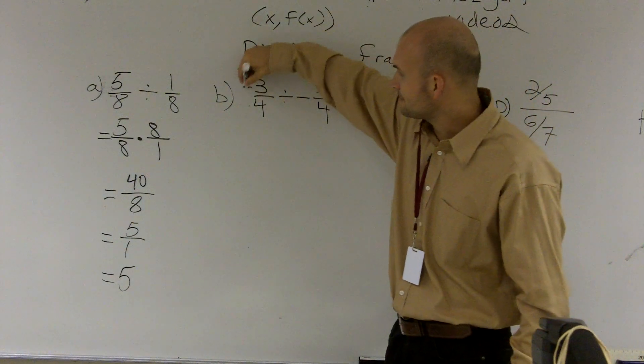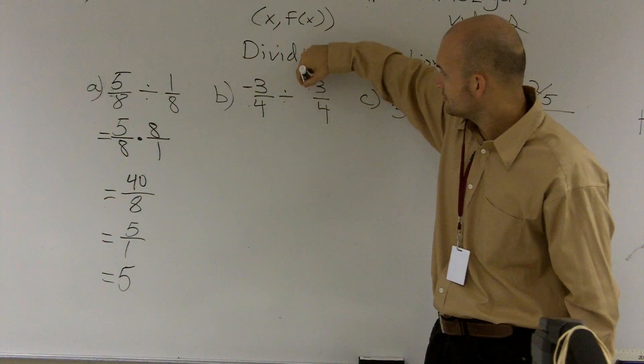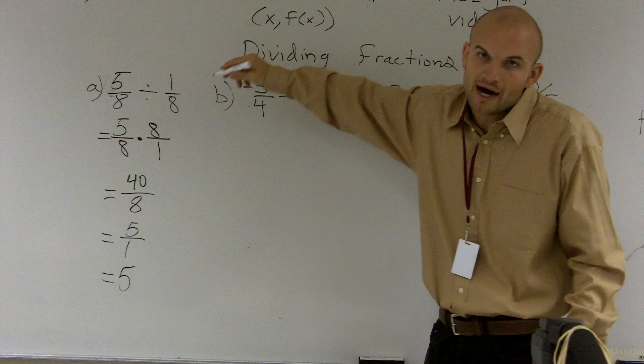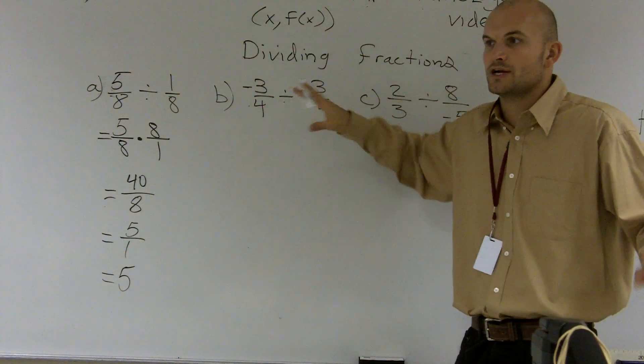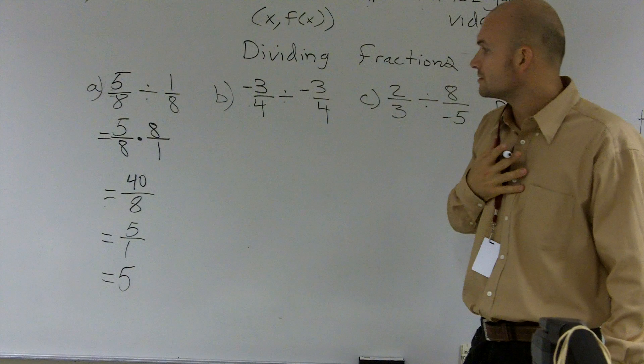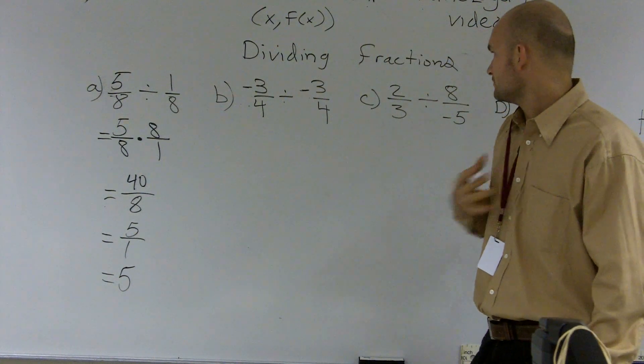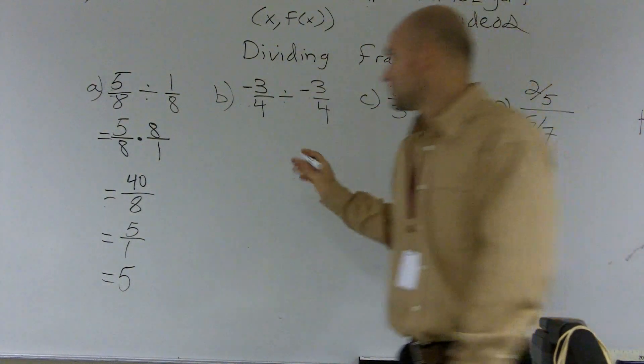So we're just going to make one of them negative, one of them positive. It doesn't matter. Let's make the top negative for both of them. You could have done the bottoms, or you could do a bottom and a top. It doesn't matter. Just pick one. So now, I'm going to change to a multiplication problem.